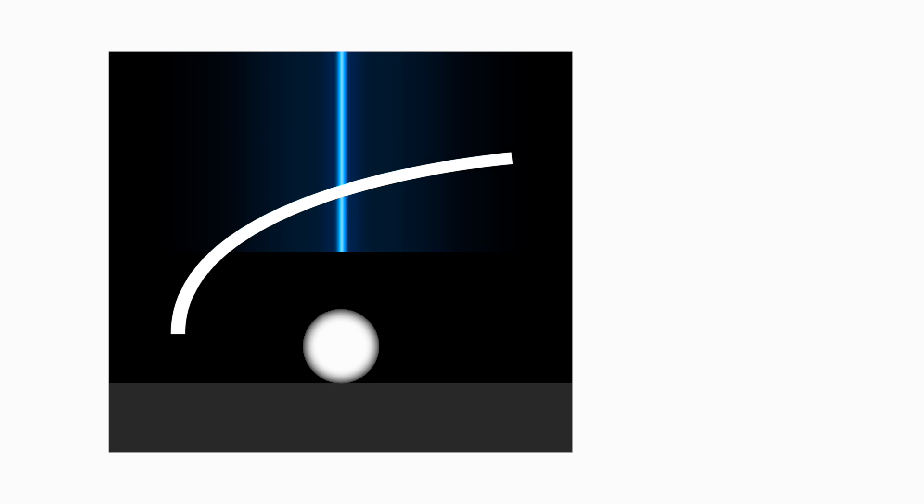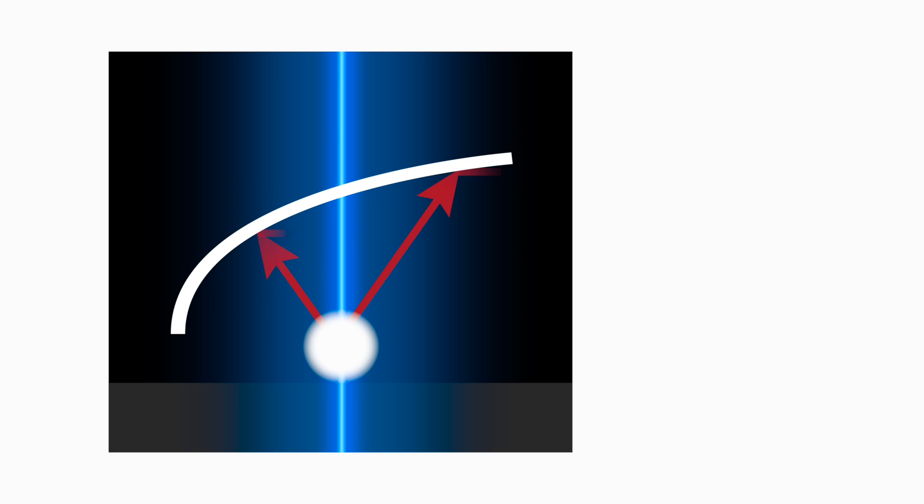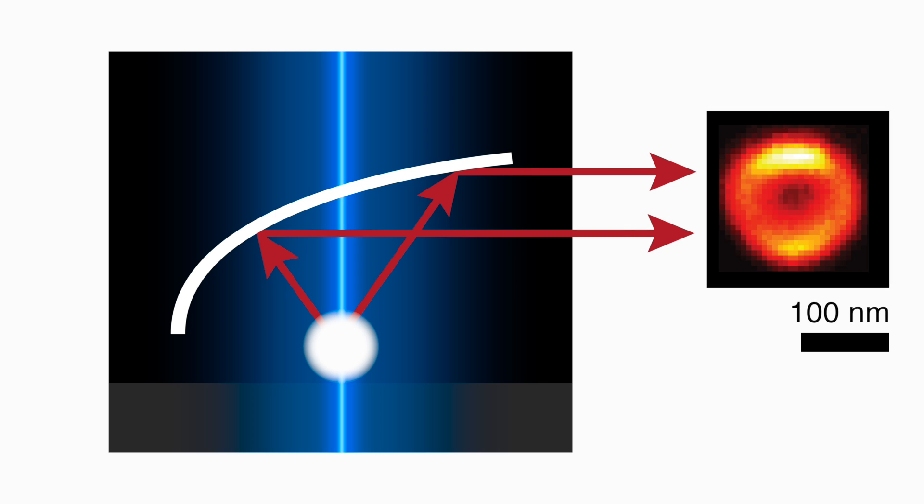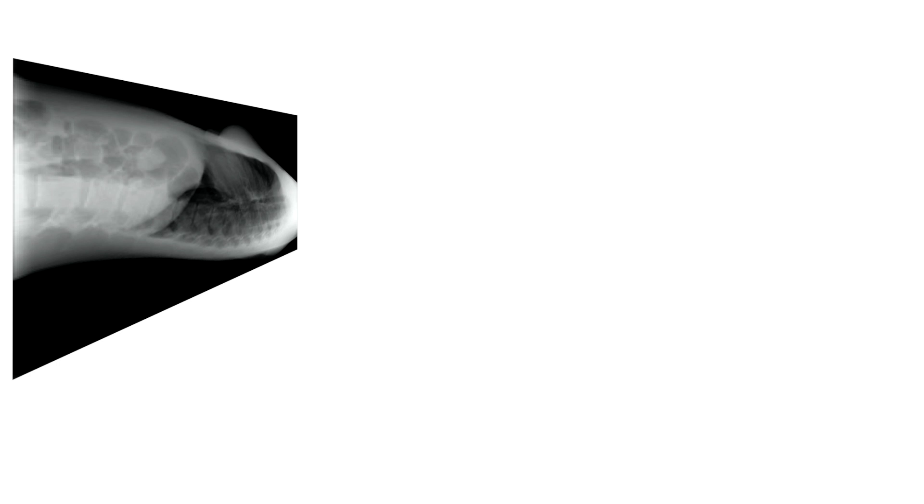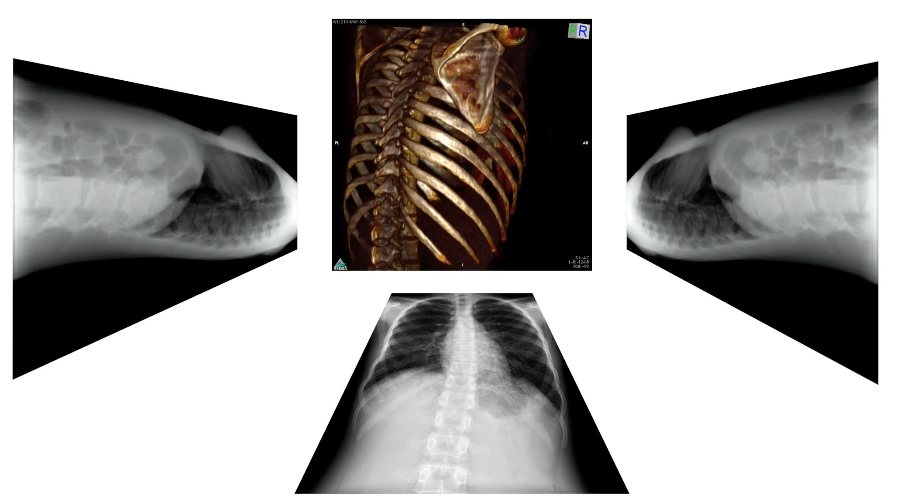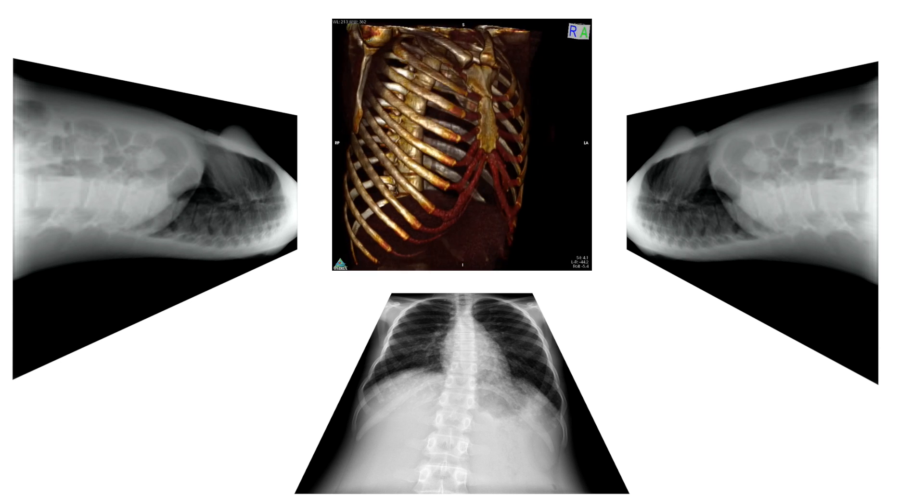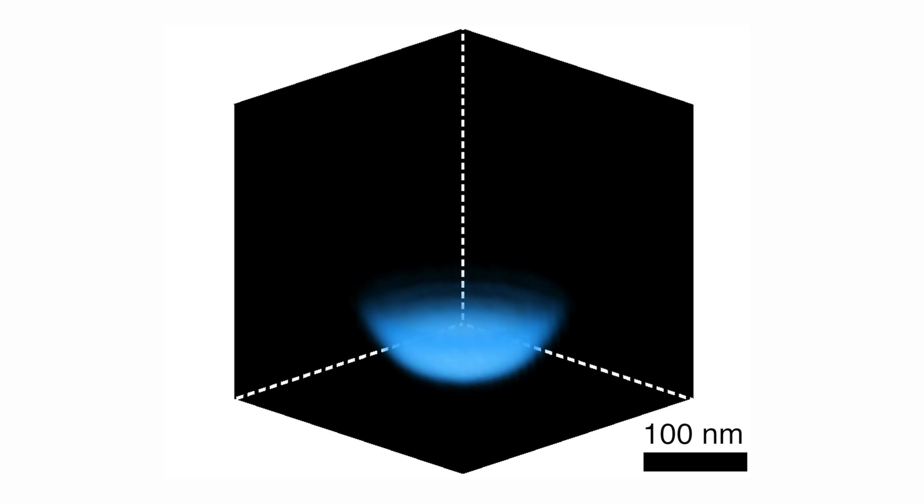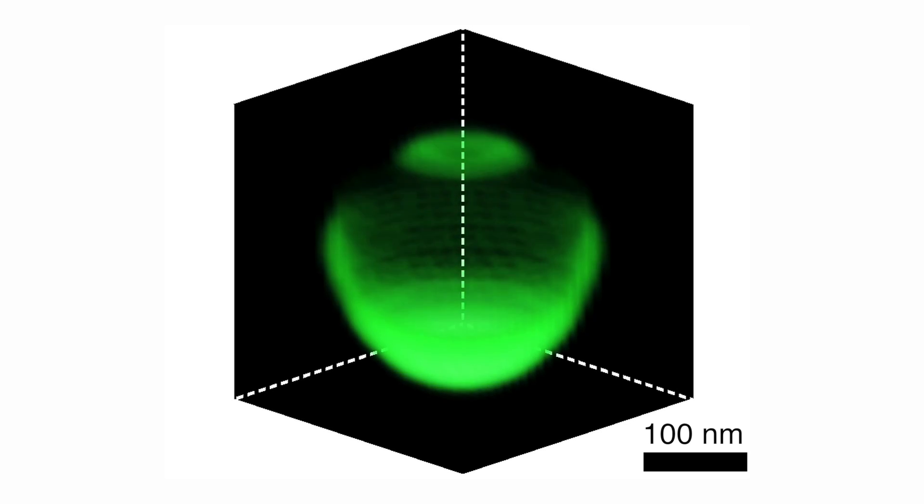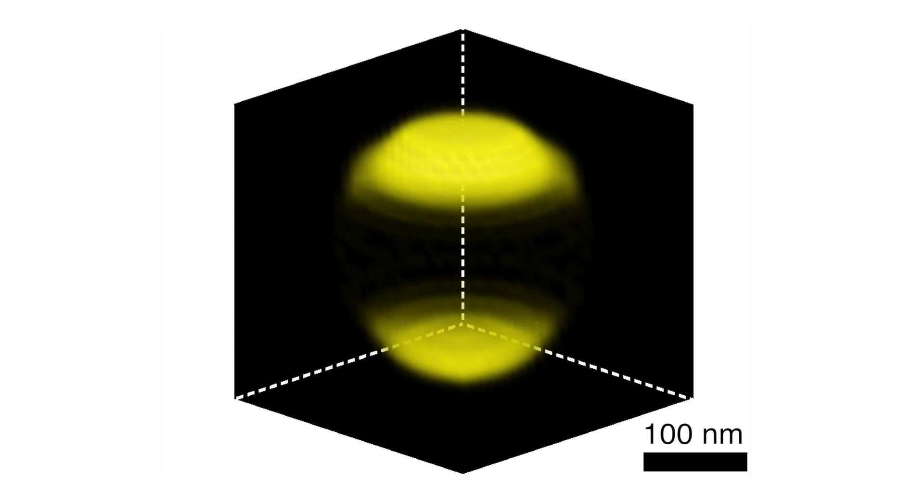So, to recap, we have combined cathodoluminescence, a technique for probing optical properties of nanoscale systems, with tomography, a 3D imaging technique. This has allowed us to generate the first three-dimensional images of the radiative optical properties of a nanostructure.